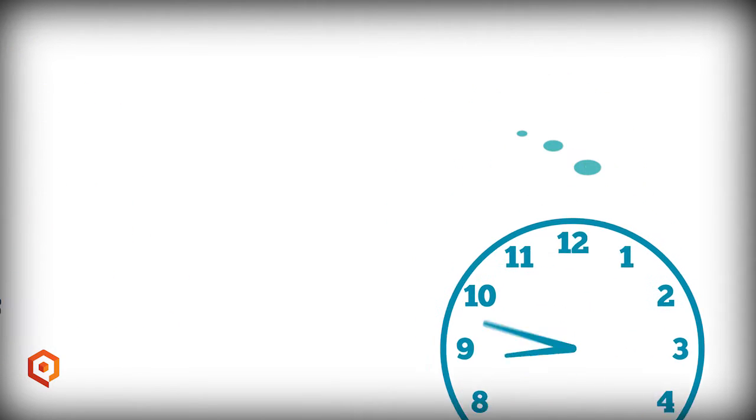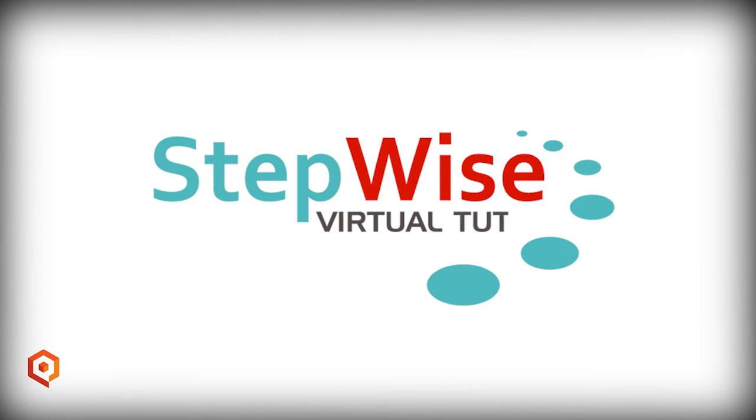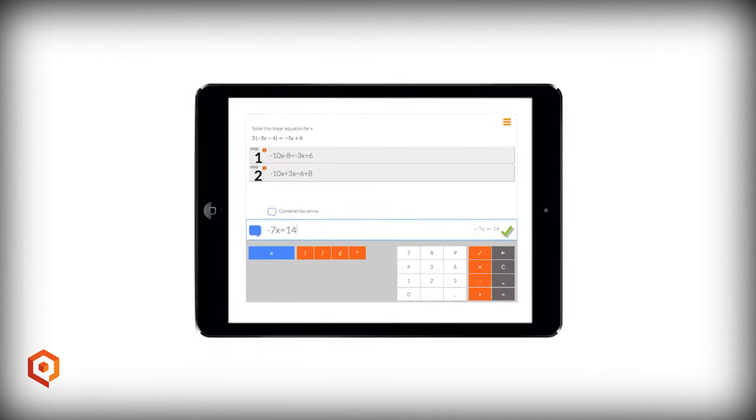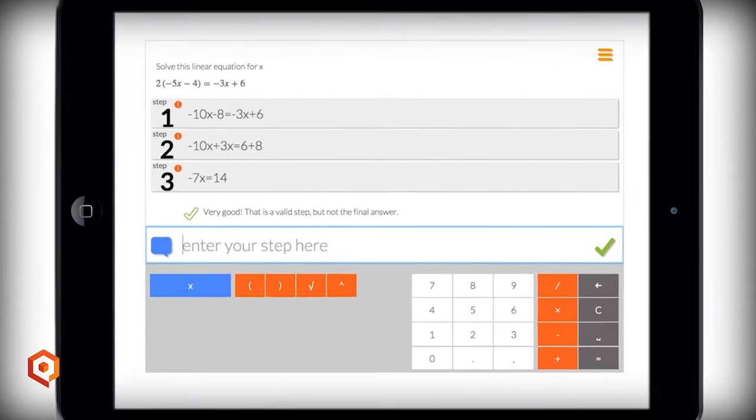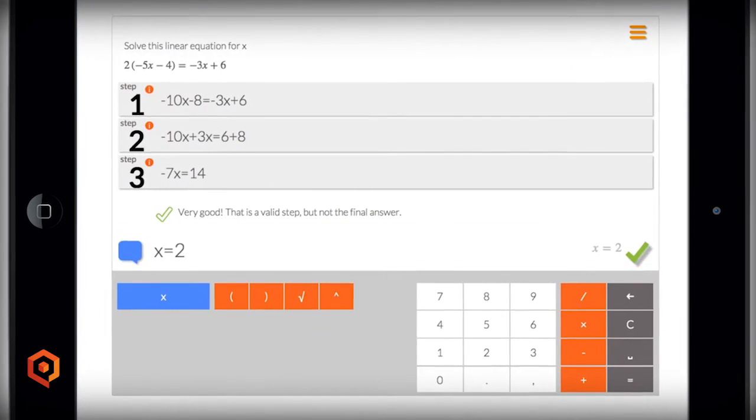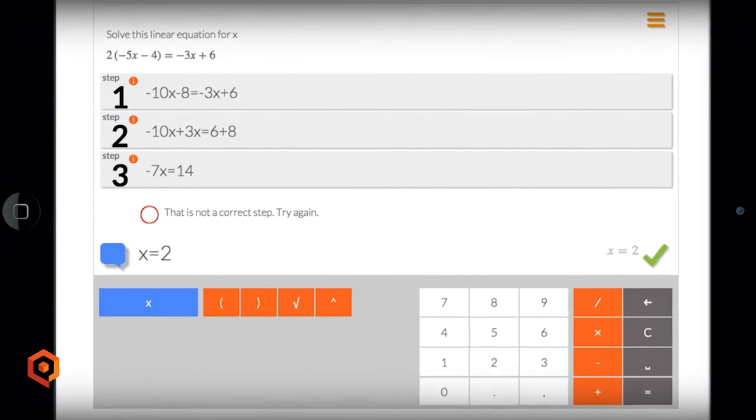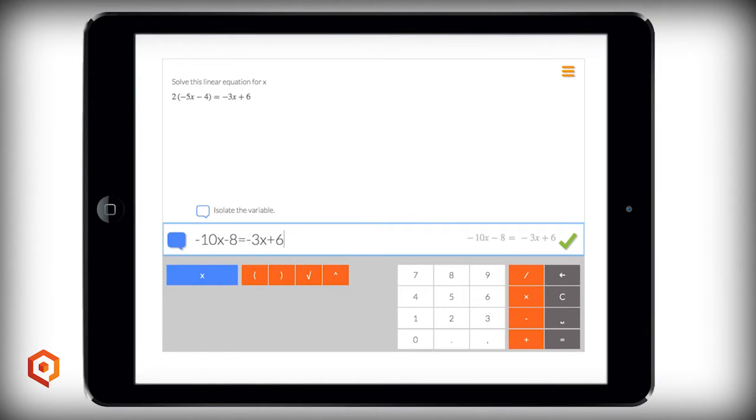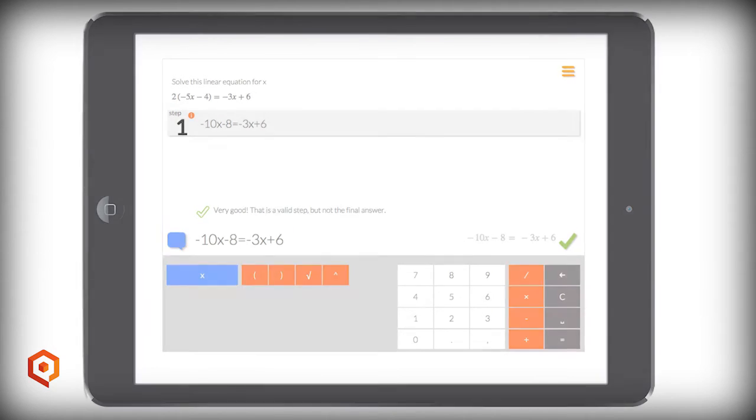Until now. With Querium's Stepwise Virtual Tutor. Stepwise is an artificial intelligence-based virtual tutor that helps teens and adult learners learn mathematics on mobile devices and laptops. Students solve problems by submitting each step for evaluation and receiving immediate feedback.